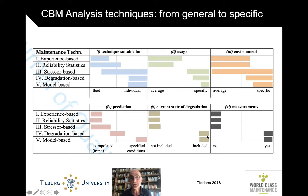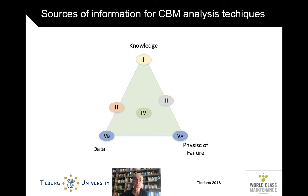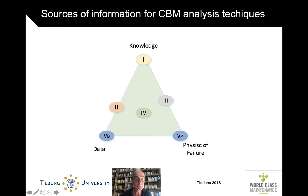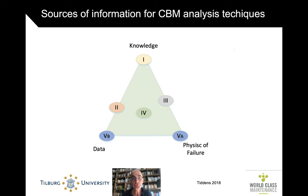Looking at where the information comes from: the experience-based approach is solely based on knowledge. The statistical approach depends strongly on available data. The stressor approach also requires some understanding of which loads are relevant — so some physics is involved there. The degradation-based approach really uses whatever data you can from all of these. The model-based approach is fully based on data at one extreme, or fully based on the laws of physics at the other.